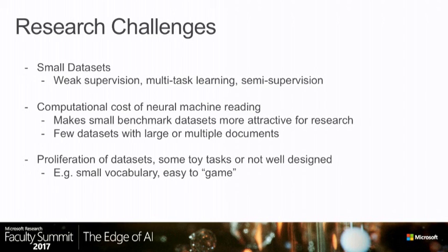To sum up and lead into the discussion: research challenges in machine reading and NLP include having only small datasets, many niche problems, proliferation of new datasets, and expensive neural methods. Lots of people work on weak supervision, multi-task learning, and semi-supervision to perform well on small datasets. There are also very few datasets considering large or multiple documents as evidence. Some datasets use toy tasks with very small vocabularies or are easy to game with simple rules. I hope we can discuss how to design good datasets.